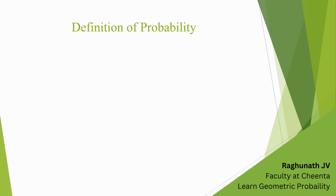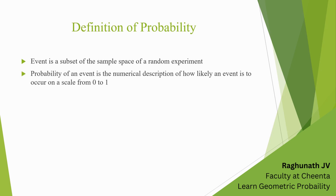Let us define probability of an event. An event is a subset of the sample space of a random experiment. For example, in a dice roll, the set {1, 2, 3} is a subset of the sample space, and hence it is an event. Probability of an event is the numerical description of how likely an event is to occur in an experiment, on a scale from 0 to 1, where 0 means the event is impossible and 1 means it must occur. For example, the probability that tomorrow is a Friday given that today is Monday is 0, because it is impossible.